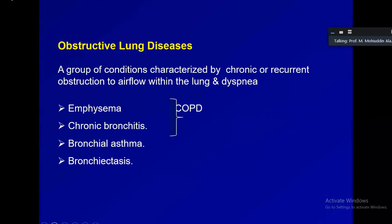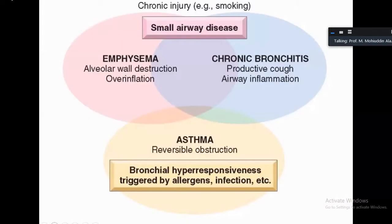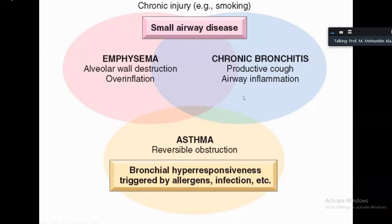Obstructive lung diseases conventionally include four entities: emphysema, chronic bronchitis, bronchial asthma, and bronchiectasis. These diseases do not exist as distinct or separate entities; there is a fair amount of overlap between emphysema and chronic bronchitis, and the same is true with bronchial asthma. So theoretically we discuss them as separate entities, but in fact they overlap most of the time.